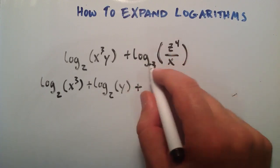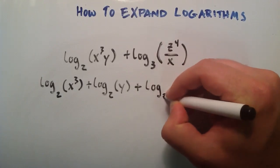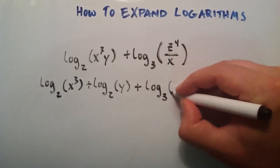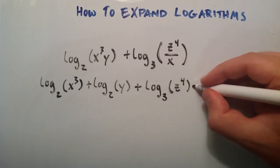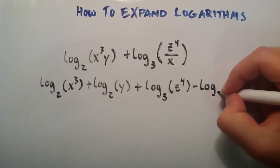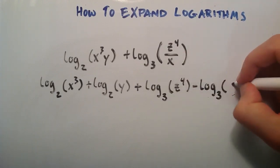So let's go ahead and separate this one. So this becomes log base 3 of the numerator, which is the top, z to the fourth, minus log base 3 of our denominator, and x is in the denominator.